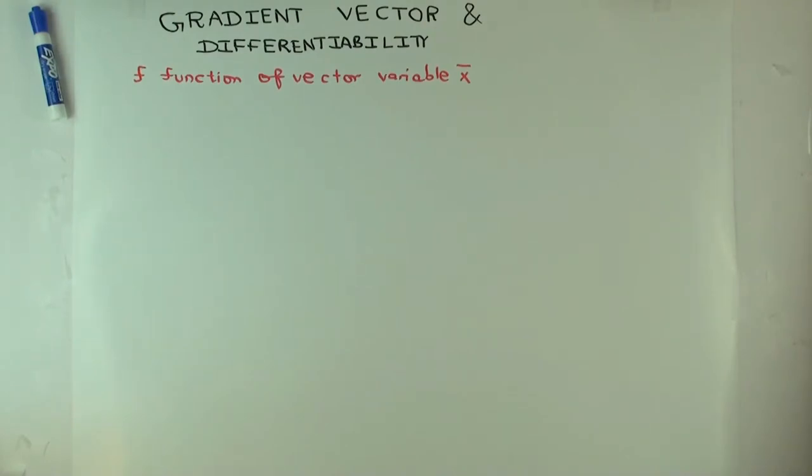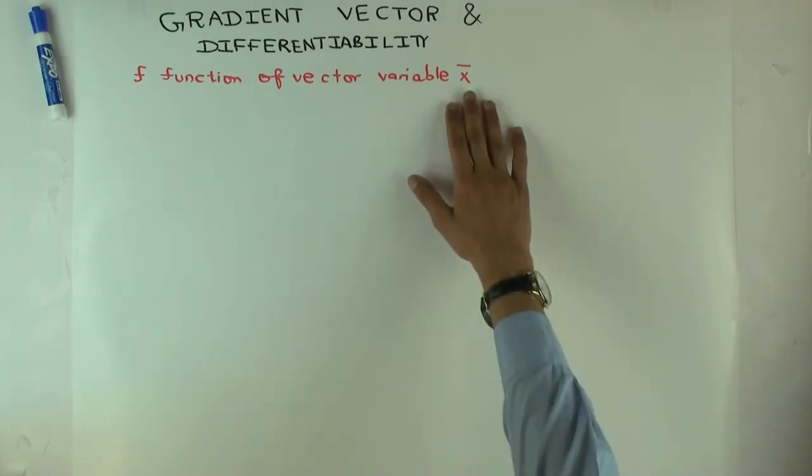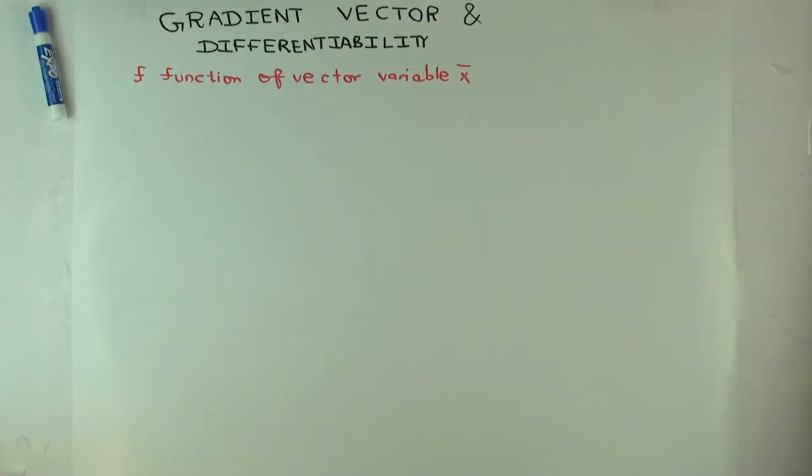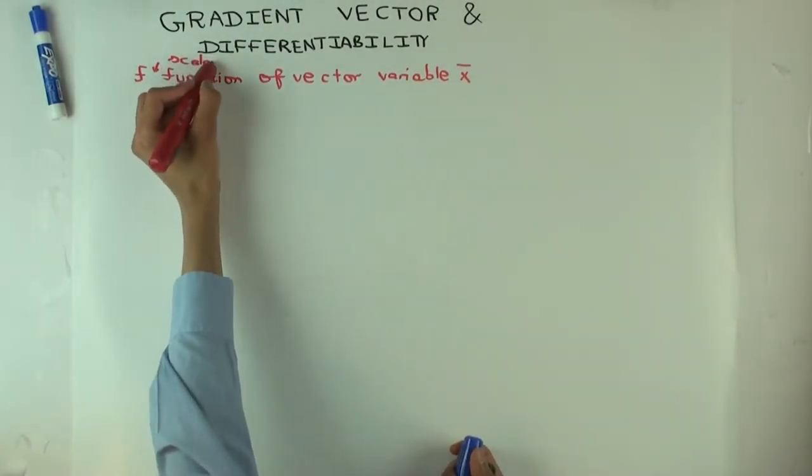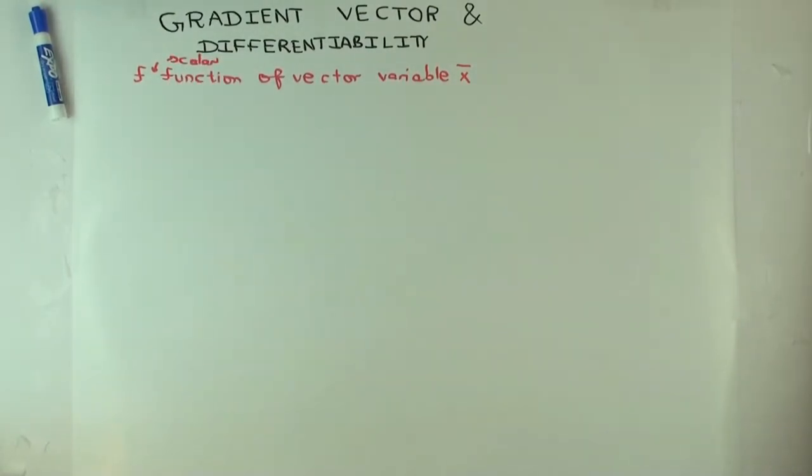Now the problem is, I want to define what it means to take the derivative of such a function, but it's not totally clear what it would mean to take the derivative because this is a function of multiple variables. So actually, there is a correct notion of derivative, but the derivative turns out not to be a scalar function but a vector-valued function.